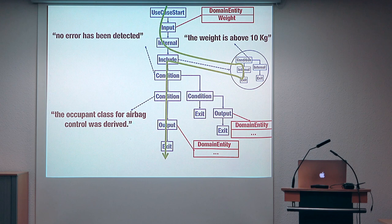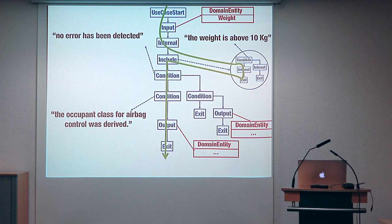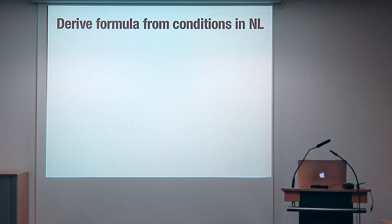The problem is that since those constraints are in natural language, we cannot do what the usual test generation techniques do. We cannot take these sentences and give them as input to a constraint solver in order to identify the actual inputs for our system. We need to build something new. What we do is to automatically derive formulas that capture the meaning of these conditional sentences written in natural language, and from these formulas we can use a constraint solver to identify the concrete inputs.